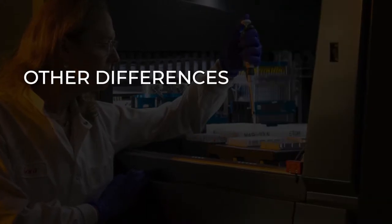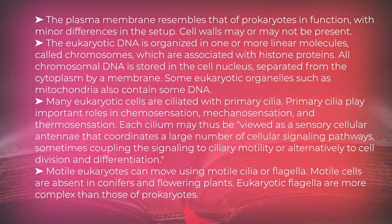Other differences include: the plasma membrane resembles that of prokaryotes in function, with minor differences in the setup. Cell walls may or may not be present. The eukaryotic DNA is organized in one or more linear molecules called chromosomes, which are associated with histone proteins. All chromosomal DNA is stored in the cell nucleus, separated from the cytoplasm by a membrane. Some eukaryotic organelles such as mitochondria also contain some DNA.